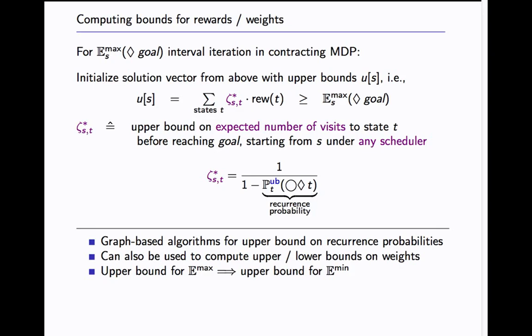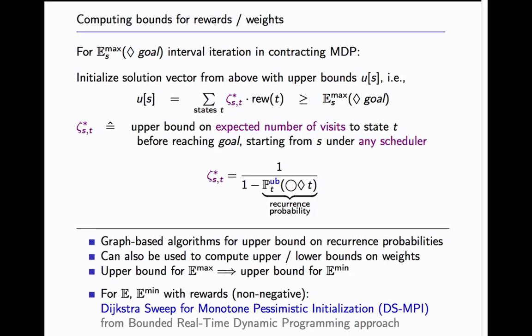We want to get rid of this P_S,T pair because that would require more computation so we just replace it with one. We know that's a proper upper bound for probabilities. For the recurrence probability we propose two graph based algorithms just to estimate and get some upper bound on the recurrence probability. We also show that this can be used to get upper and lower bounds when we use weights, so if you have also negative rewards. Clearly any upper bound for E_max is also an upper bound for E_min. Additionally there's for DTMCs and for E_min with non-negative rewards we can also use Dijkstra sweep for monotone pessimistic initialization algorithm from the bounded real time dynamic programming approach. That's another method of obtaining upper bounds.